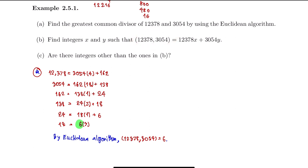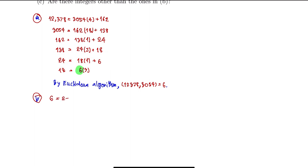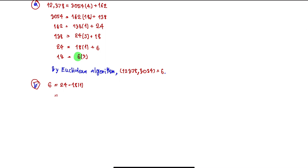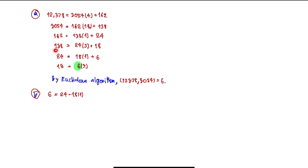Now let's find the Bézout identity for this greatest common divisor. We start from the next-to-last equation: 6 equals 24 minus 18 times 1. Now we substitute for 18. Looking at the higher equation, 18 equals 138 minus 24 times 5, so we have 6 equals 24 minus (138 minus 24 times 5) times 1.